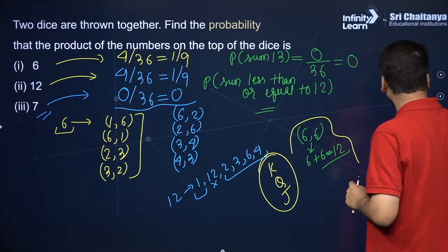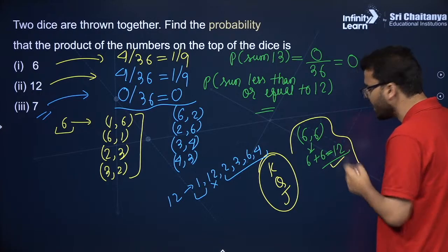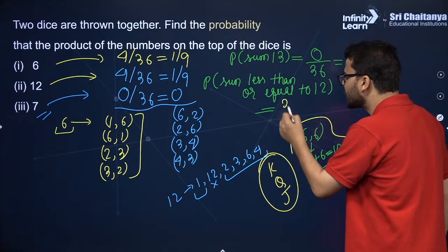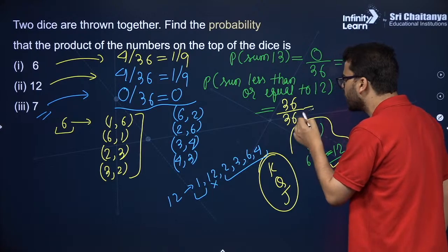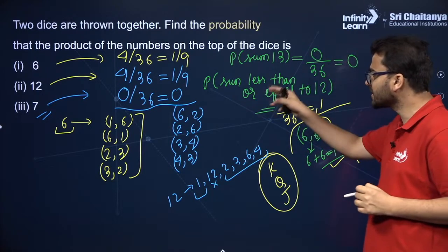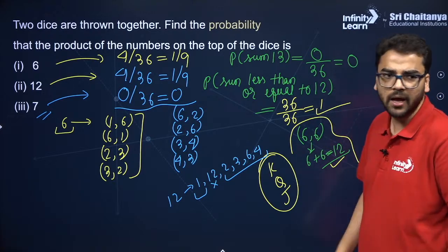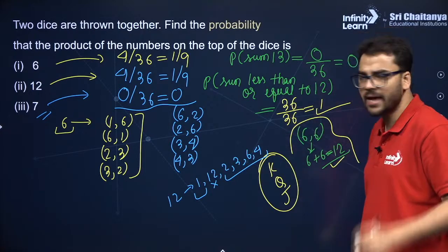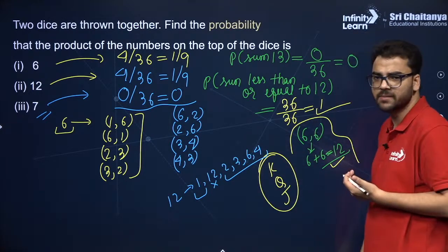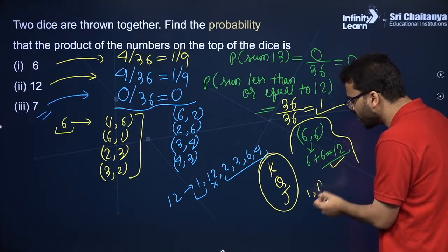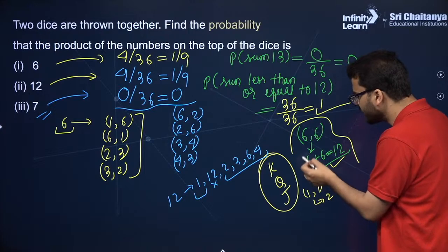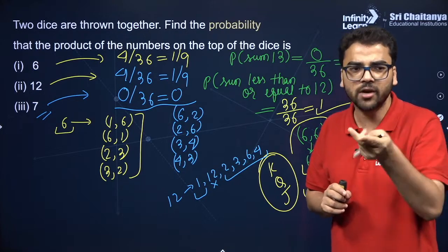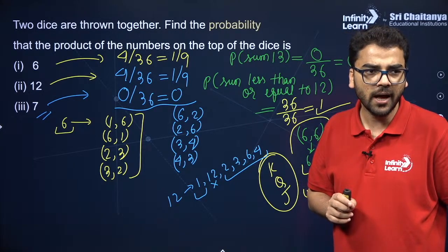Every time you roll a pair of dice, the sum will always be less than or equal to 12 — minimum sum is 1+1=2, maximum is 6+6=12. So the probability that sum is less than or equal to 12 is 1. I hope that is clear to every student.